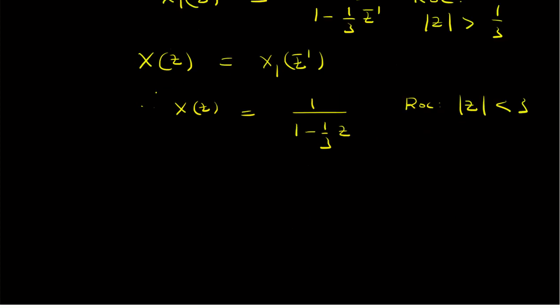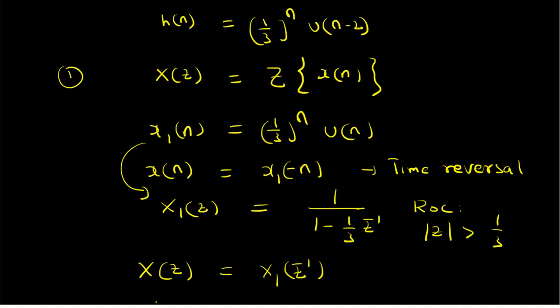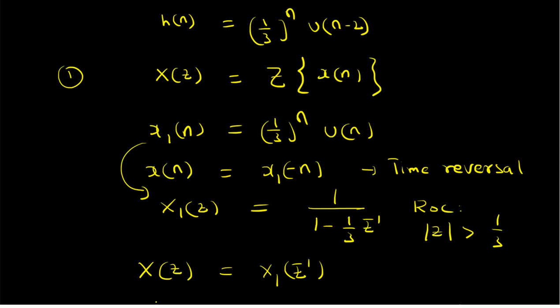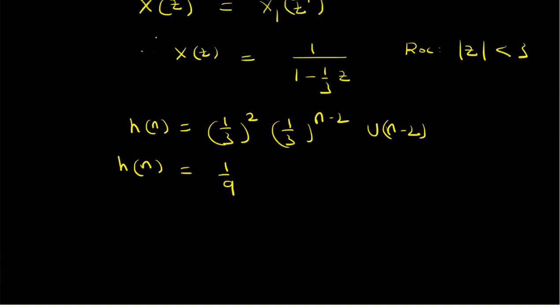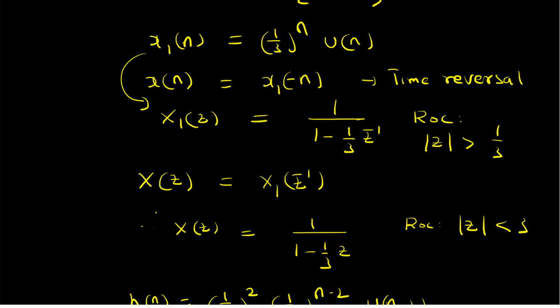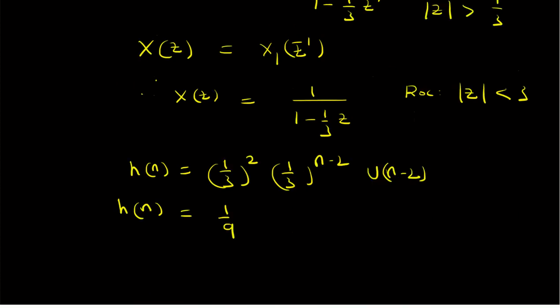For H of n we need to find H of Z. H of n can be written as 1 by 3 squared multiplied by 1 by 3 power (n minus 2) times U of n minus 2, by adding and subtracting 2 in the exponent. Therefore H of n equals 1 by 9 times X1 of n minus 2 — it is a delayed version of X1 of n.